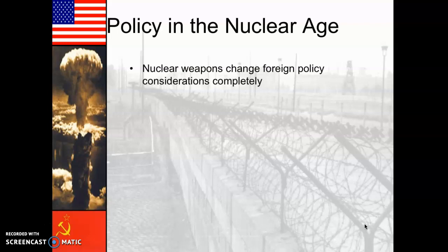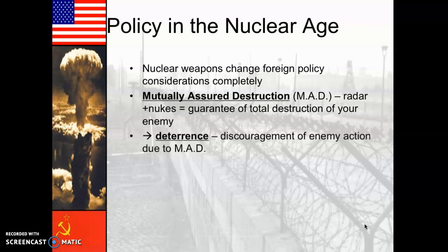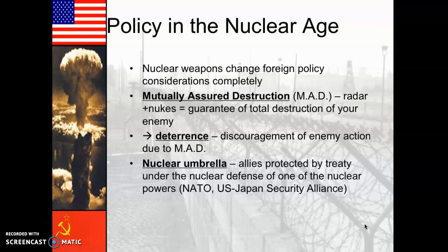Nuclear weapons definitely change foreign policy completely. One really important term is mutually assured destruction. The fact that we have radar systems that can detect any nuclear weapon launch guarantees we could launch back before actually getting struck. So once you launch the weapon, you know retaliation is coming — and that tends to guarantee you're not going to use them. This phenomenon is called nuclear deterrence. To extend this nuclear deterrence over essentially the entire world, both the United States and the Soviet Union expanded their nuclear umbrellas — alliances that promised other nations that if attacked with nuclear weapons, they would defend them and respond in kind.